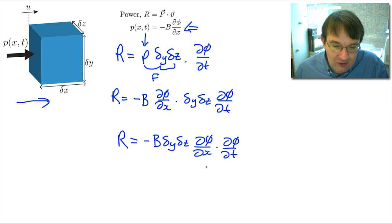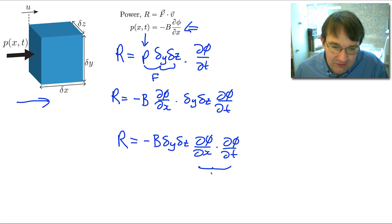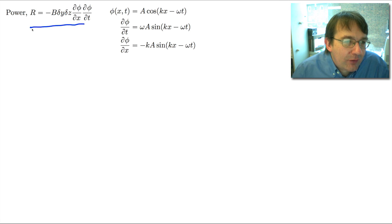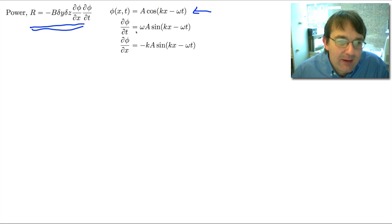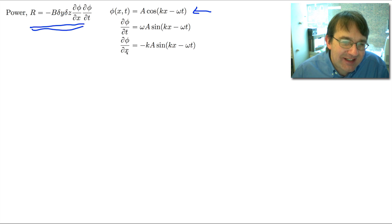This is very similar to the initial expression we got for the power of a wave on a string - a product of two partial differentials. Now we need to evaluate these using our wave solution. We start with the displacement written in trig form, differentiate with respect to time to get a factor of omega - a minus sign from going cosine to sine, and another minus sign - so we get a plus. When we differentiate with respect to x keeping t constant, we get a factor of k and a minus sign from going cosine to sine.